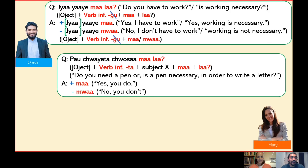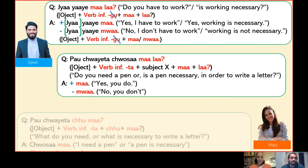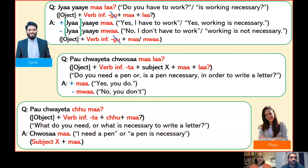Chosa ma. And finally in the third part of the lesson, we learned how to ask: pau choi ta chuma — 'What do you need?' or 'What is needed to write a letter?' Using the structure: object plus verb infinitive with suffix ta, plus chu, plus ma. And we learned how to answer: chosa ma — 'a pen is needed'.